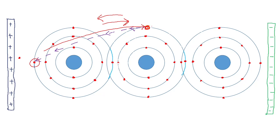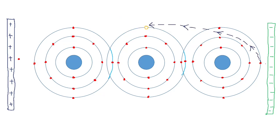Similarly, the hole at the second atom's position can attract a free electron from the third atom. That electron moves to fill the hole, and the third atom's position becomes a new hole. So again, the electron has moved in one direction and the hole has moved in the opposite direction.